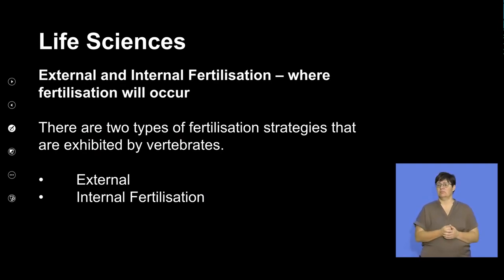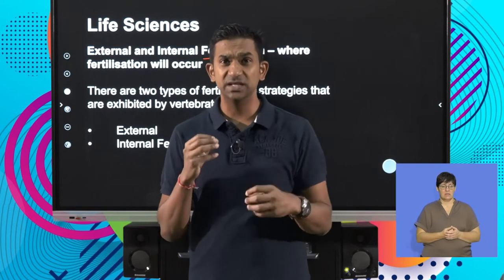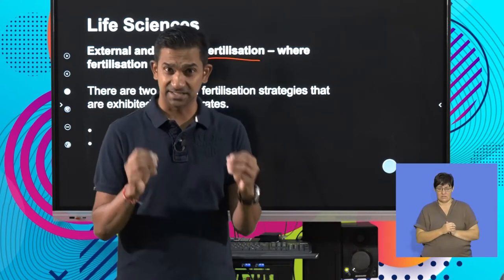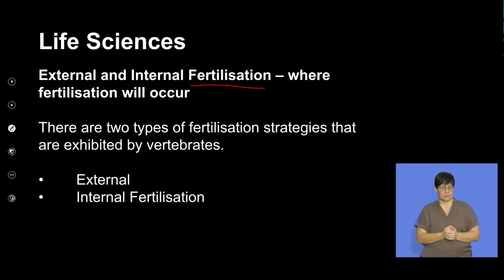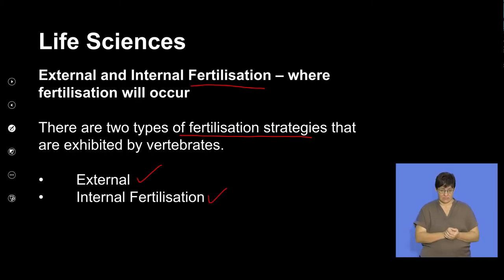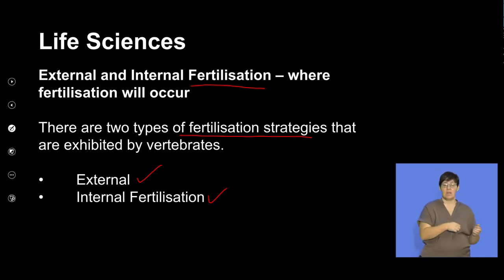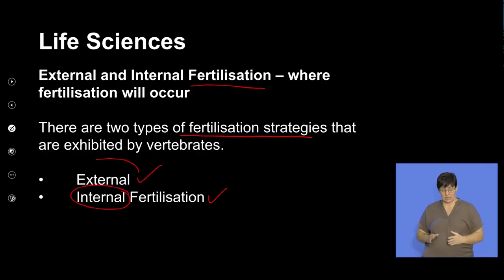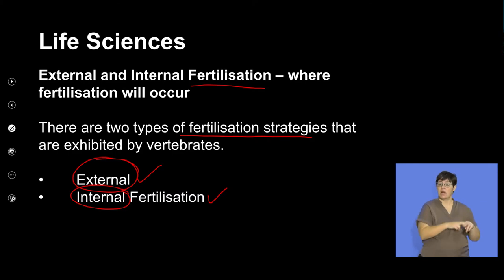Fertilization is the fusion of gametes produced by mating individuals. There are two types of fertilization exhibited by vertebrates: external fertilization and internal fertilization. If fertilization happens within the body, we refer to it as internal. If it happens externally, it is a different mechanism where gametes rely on external factors to bring them together.